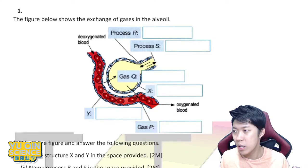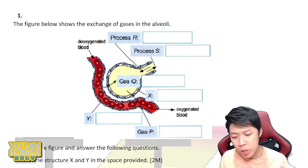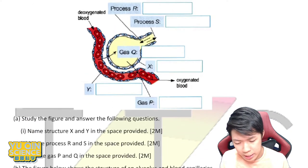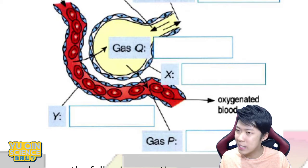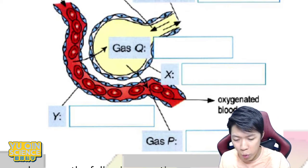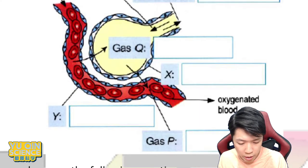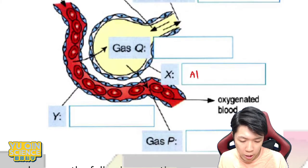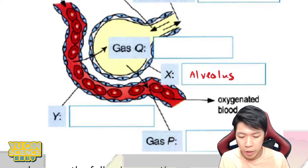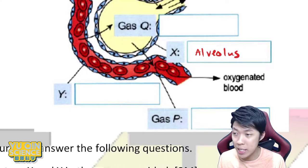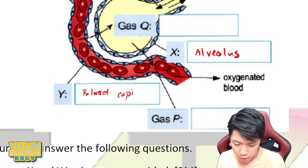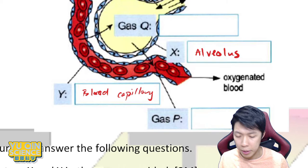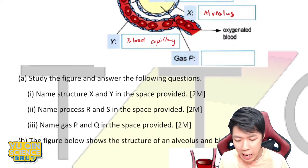Question one: name structures X and Y. X is pointing at the alveolus — or alveolus wall, which is also acceptable. Y is pointing at the blood capillary.